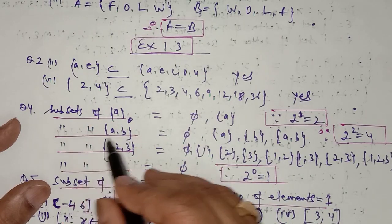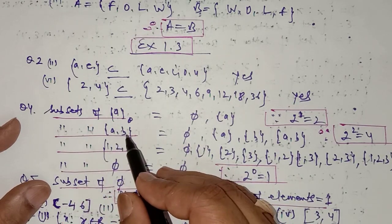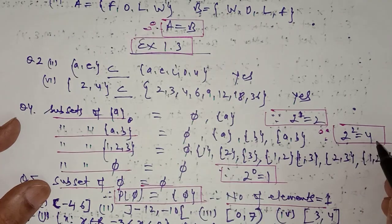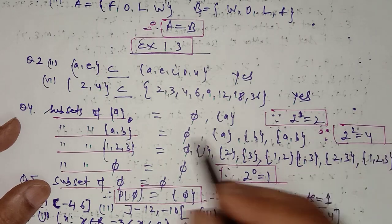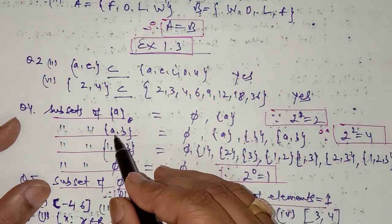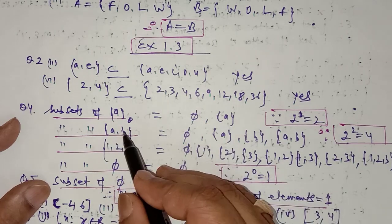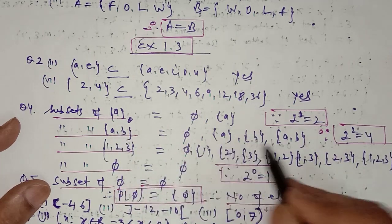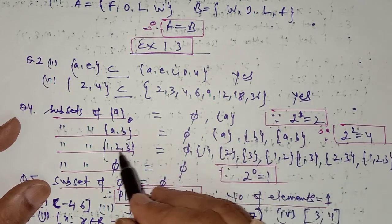Now for the subset of {a, b}: this set has two elements, so 2 raised to power 2 means it will have four subsets, which are: empty set, {a}, {b}, and {a, b}.